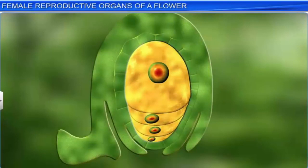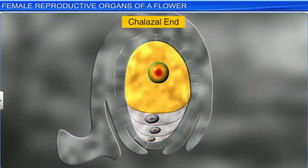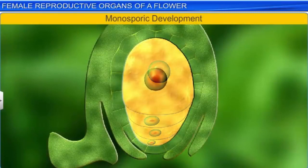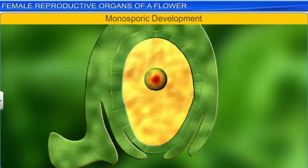Of the four megaspores, usually the one near the chalazal end becomes functional, whereas the other three near the micropyle end degenerate. The functional megaspore enlarges and simultaneously undergoes mitotic division to form an embryo sac. This type of formation of the embryo sac from a single megaspore is known as monosporic development.